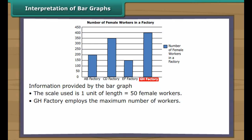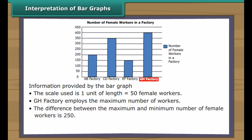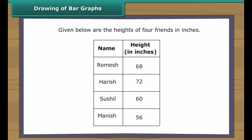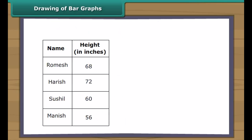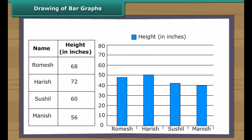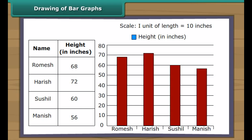Let us interpret one more bar graph. This is a vertical bar graph showing details of female workers in a factory. The scale used is one unit of length equals 50 female workers. GH factory employs the maximum number of female workers. The difference between the maximum and minimum number of female workers is 250. If CD factory employs 50 more female workers, it will be at par with GH factory.